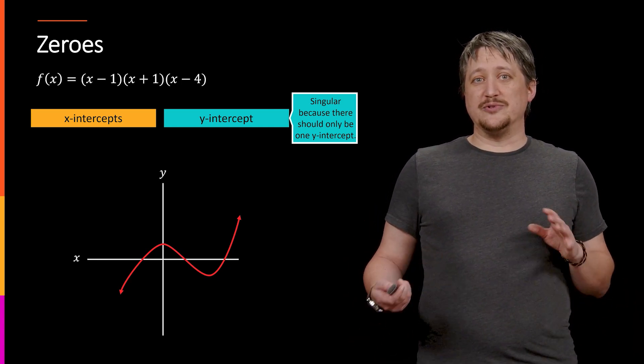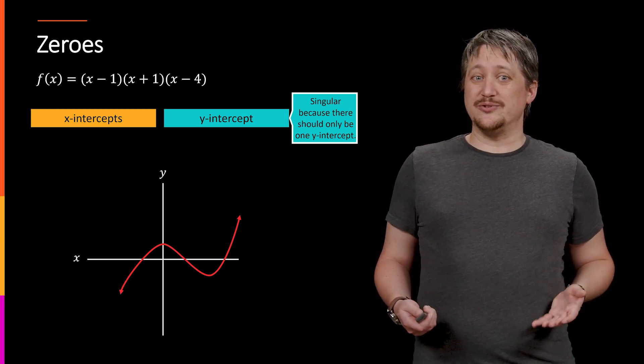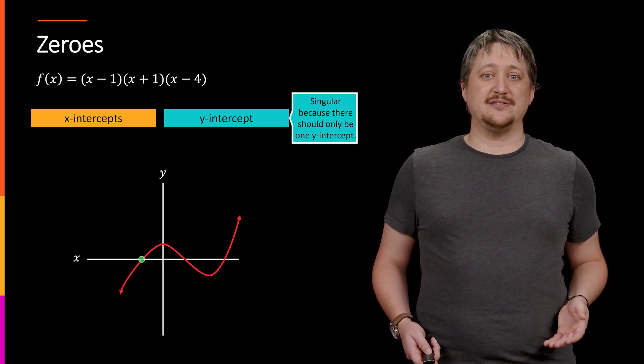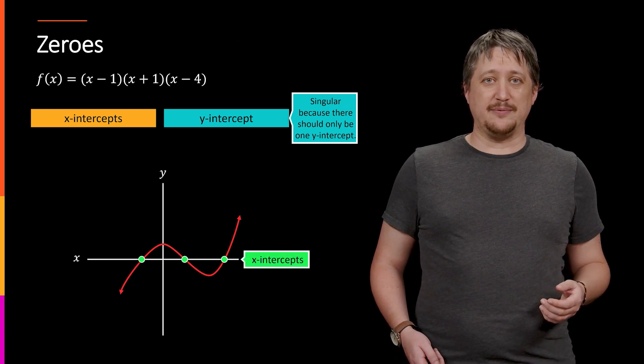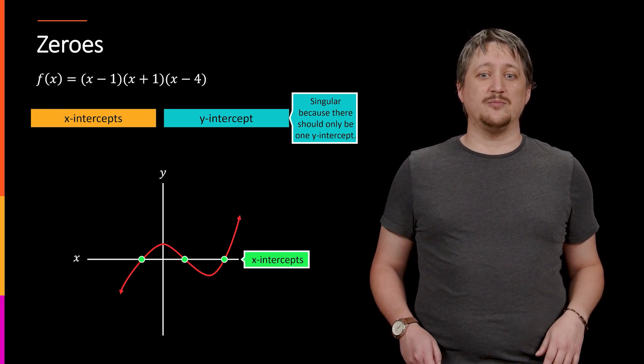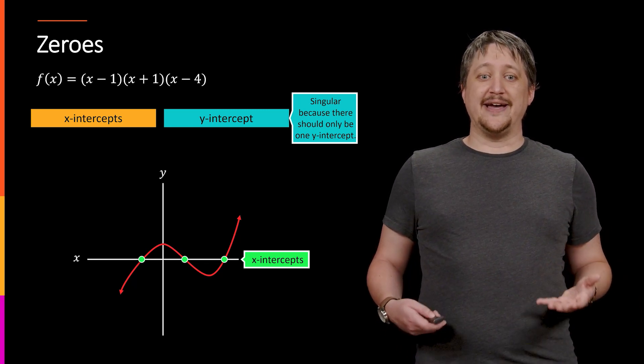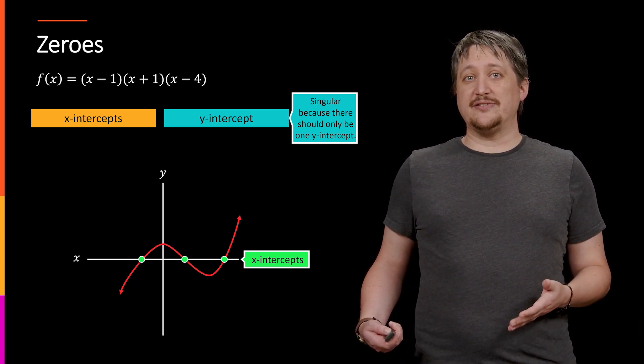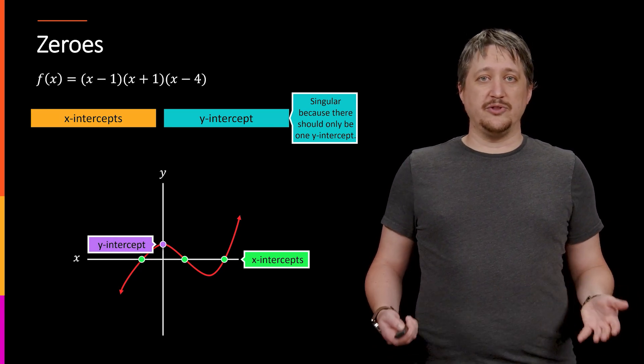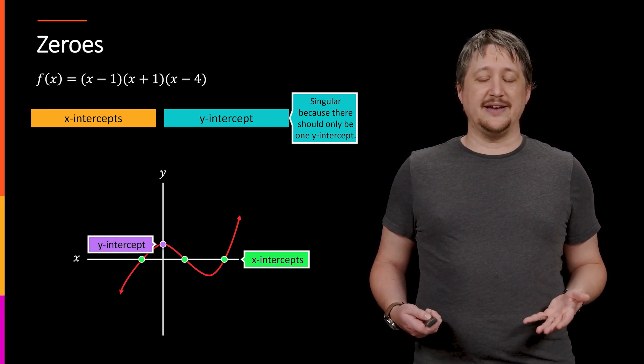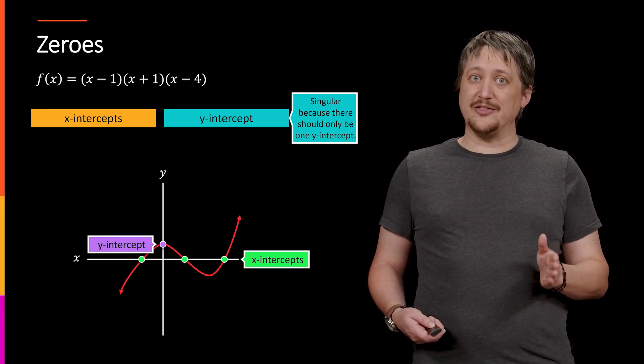Likewise, the x-intercepts you can have a bunch of those because that's where it's hitting the x-axis. So here we can see we have three x-intercepts, places where it's hitting, going through, or even just touching that x-axis. In contrast, the y-intercept, there's only one of those where it's hitting that particular spot on the y-axis.